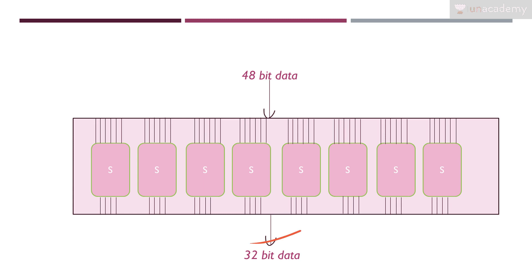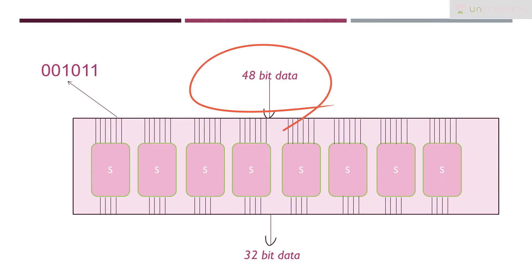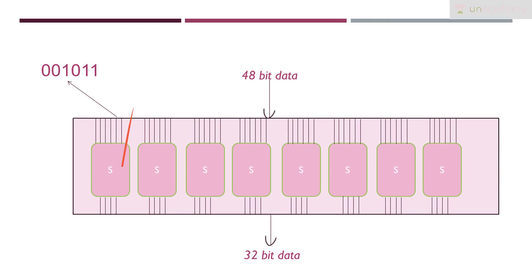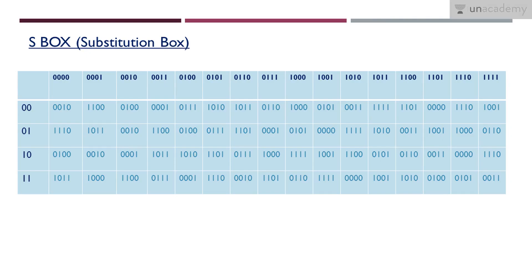An S-box is kind of a table with predefined values. Let's explain it using an example. Let my 6 bit input be 001011 — this is binary data. I need this 6 bit to be converted to 4 bit. So I select an S-box which has predefined values, and I need values for row and column, then choose the corresponding value.